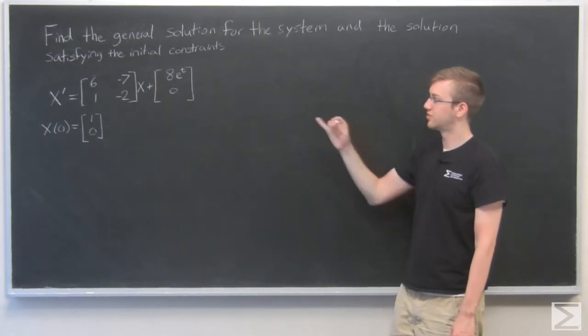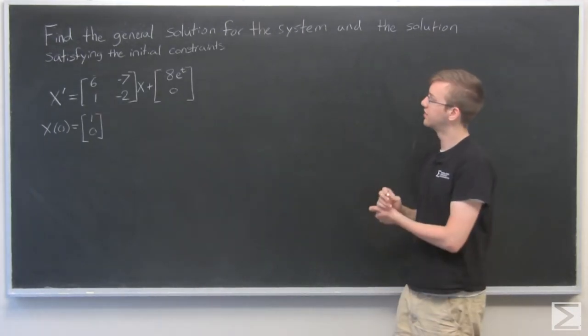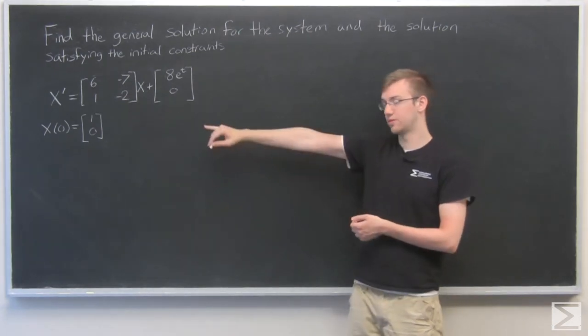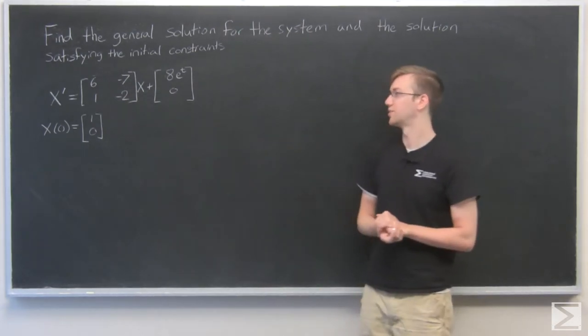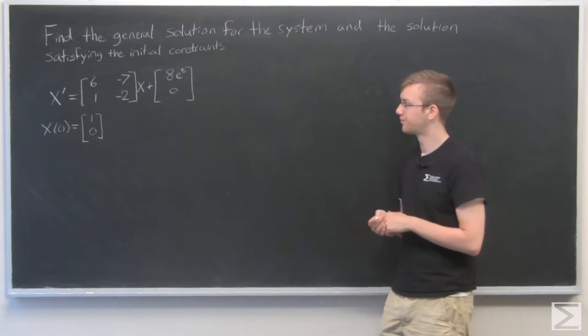For this problem, we need to find the general solution for this system and the particular solution which solves those initial constraints where x(0) is equal to [1, 0].